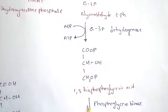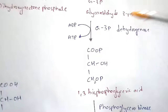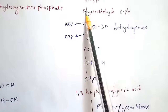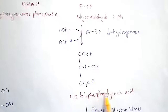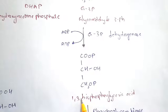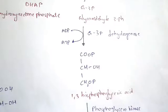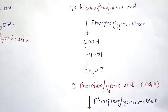G3P undergoes transformation to form 1,3-bisphosphoglyceric acid, by the enzyme G3P dehydrogenase. In 1,3-bisphosphoglyceric acid, at the first carbon and the third carbon there is a presence of phosphate groups — hence the name '1,3-bis', indicating two carbons with phosphate groups.